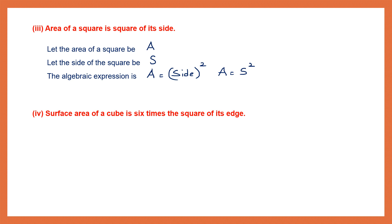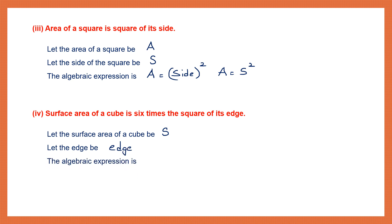Question 4: Surface area of a cube is 6 times the square of its edge. Let the surface area be S and the edge be represented as 'edge'. So the algebraic expression is S = 6·edge², removing the multiplication sign to write 6·edge².